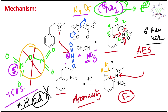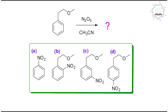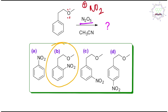So this selective ortho nitration is the major product — the answer is option B. Now, if this question appears in your exam, how can you arrive at the right answer in less than 30 seconds? First, recall the structure of N2O5 — it is a source of the nitronium ion NO2+. Second, understand the role of the ether oxygen's lone pair: it coordinates with NO2+ such that it remains closer to the aromatic ring, bringing the ortho proton into close proximity with NO2+.